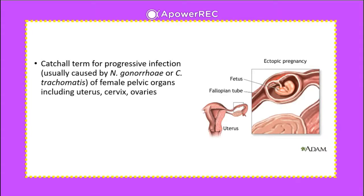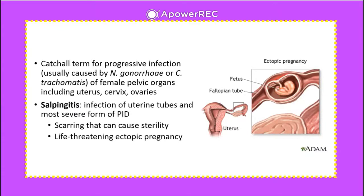Pelvic inflammatory disease (PID) is a catch-all term for the progressive infection of the female pelvic organs, including the uterus, cervix, and ovaries. It is usually caused by Neisseria gonorrhoeae or Chlamydia trachomatis. It can lead to salpingitis — infection of the uterine tubes — the most severe form of PID, which can cause scarring leading to sterility and life-threatening ectopic pregnancies.